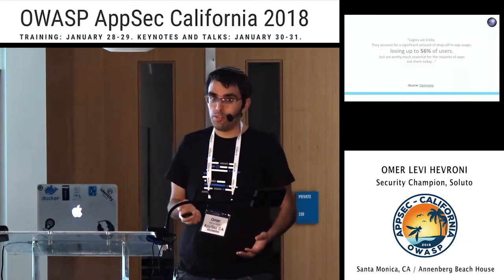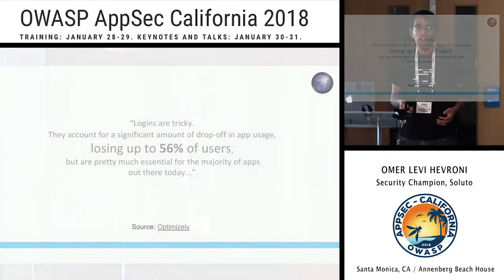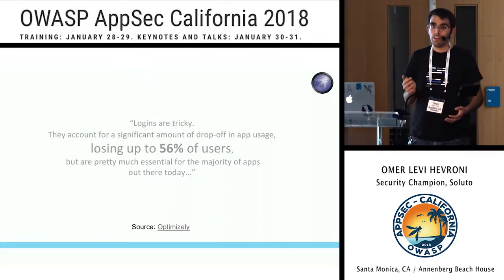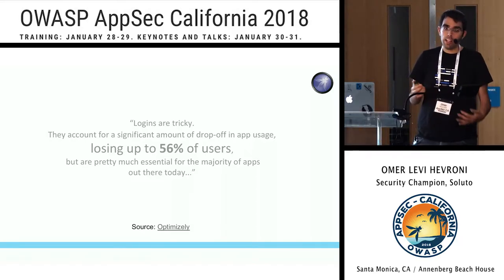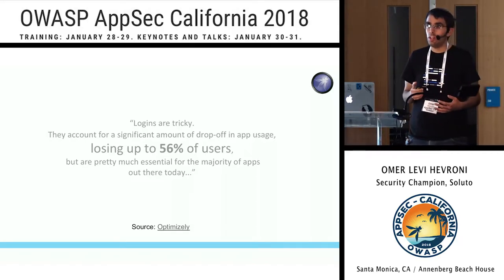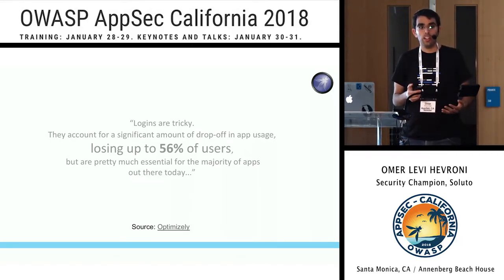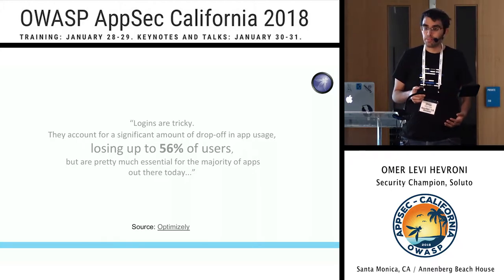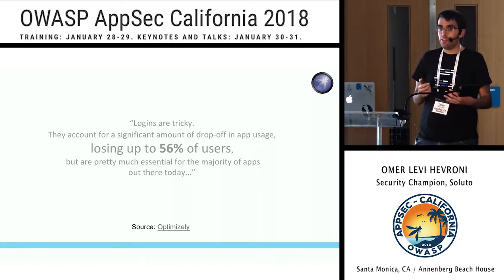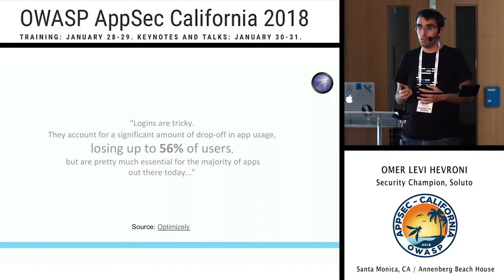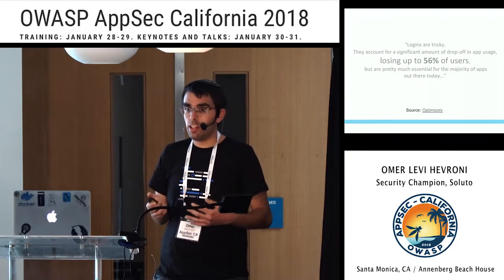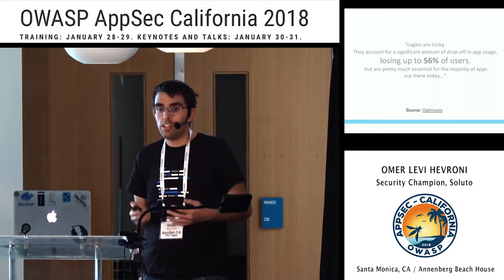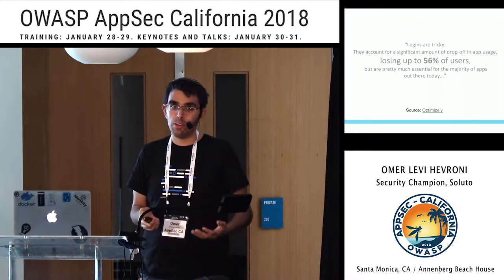This is a quote from Optimizely. Optimizely talks about a 56% drop, which is a lot of users to lose. They offer a few tips to make logins better and lose fewer users. But even if we apply those tricks and get down to, say, 20% loss, it's still losing a lot of users just because we wanted authentication.